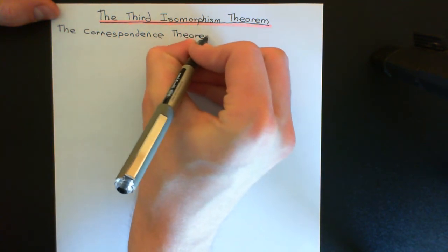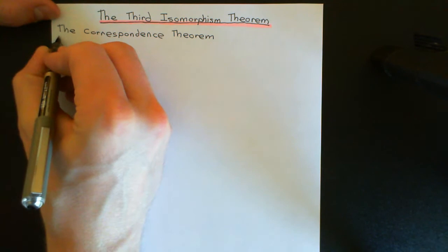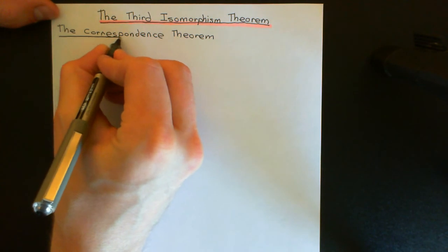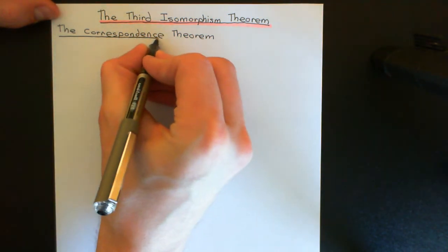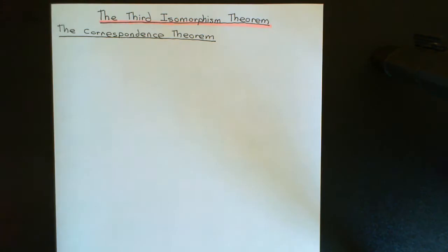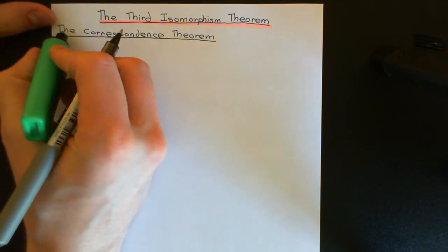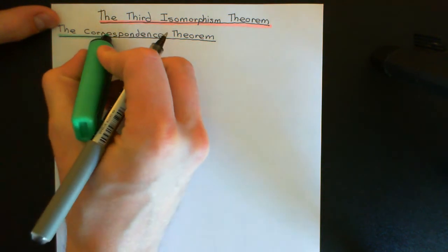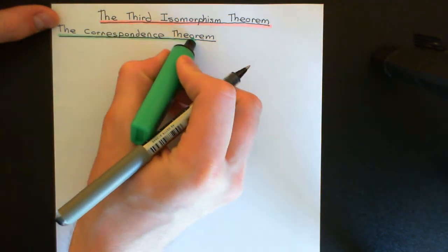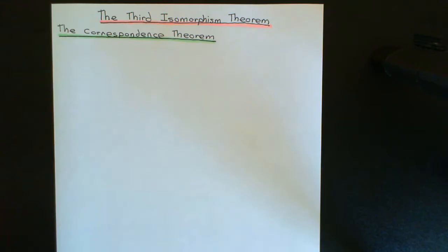The correspondence theorem is all about quotient groups. It's about a special, incredible bijective correspondence between the subgroups of the initial group that contain the normal subgroup you're going to quotient out by, and subgroups of the quotient group. We'll start with a brief recap of quotient groups, because being familiar with those concepts is going to be utterly essential to understand the theorem.